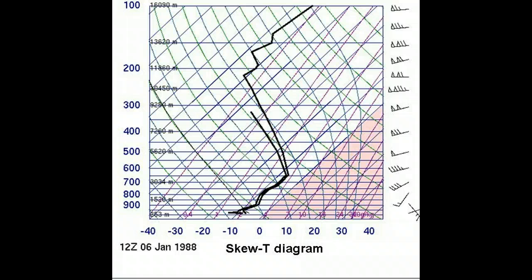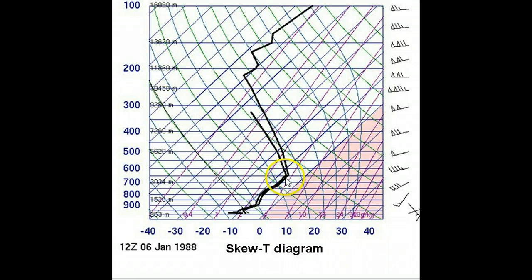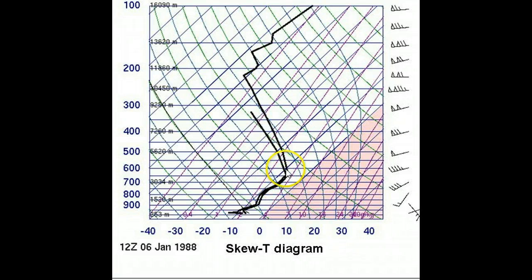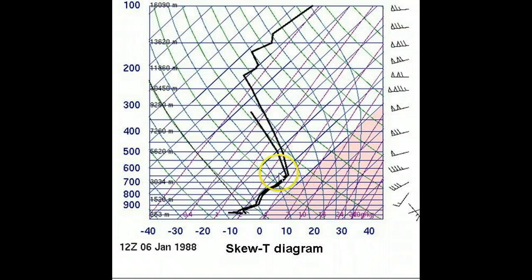Right here we're looking at a snow sounding. Why is this a snow sounding? Here is your zero degree isotherm — that's the zero degree Celsius line. Here's your temperature profile, and here is your dew point profile. As you can clearly see, the entire atmosphere is below freezing. You can also see it's very moist, with the temperature and dew point pretty much uniform all the way up to about 400 millibars, and really saturated up to about 650 millibars.